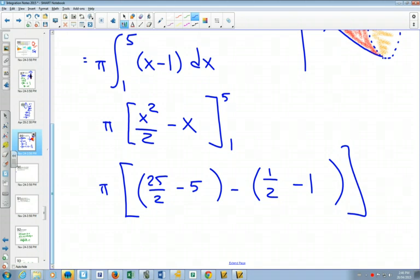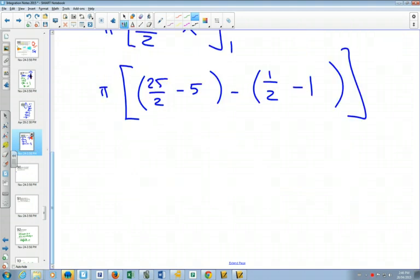But I notice that I've got some fractions that already have the common denominator and some other ones that don't. So what I'm going to do is put together 25 over 2 minus 1 over 2, which gives me 24 over 2. And minus 5 minus a negative 1 will give me negative 4. That actually saves me some fraction time, because 24 over 2 is just 12. 12 minus 4 is 8, so 8π.